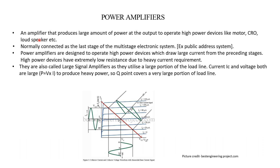A power amplifier produces a large amount of power at the output to operate high power devices like motors, CRO, loudspeakers, etc. These high power devices have very low resistance, so they draw a large amount of current from the preceding stages. When they draw a large amount of current, we need heavy power to operate them. Therefore, to operate these high power devices, we connect a power amplifier in the stage preceding them.